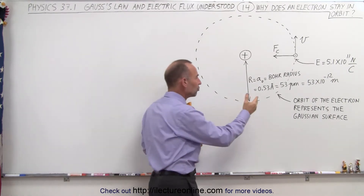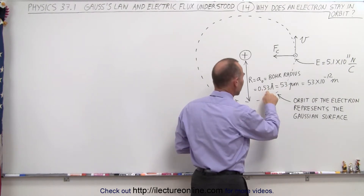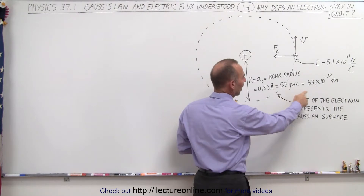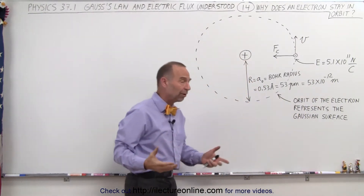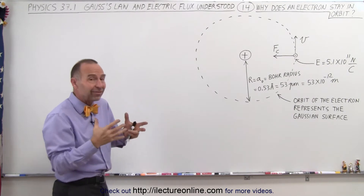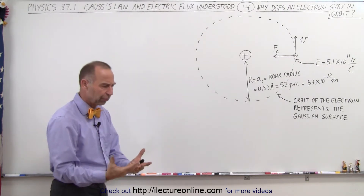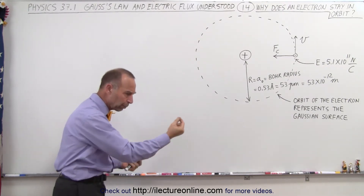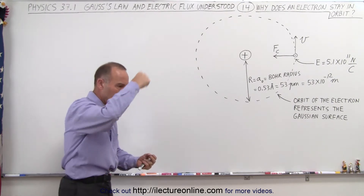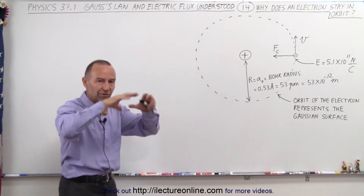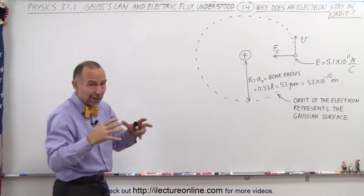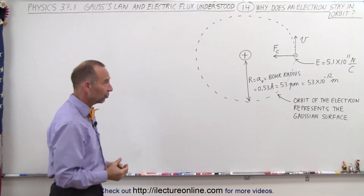The distance to the electron is 0.53 angstroms, which is 53 picometers — a picometer is 10 to the minus 12 meters. The orbit of an electron, in essence, represents a Gaussian surface, because electrons don't orbit the nucleus like a planet around the sun. They orbit in such a way that they form a spherical structure called an orbital around the nucleus, making it a good representation of a Gaussian surface.